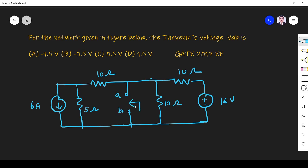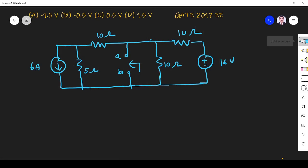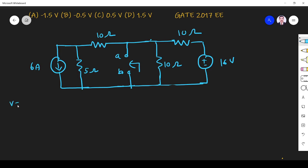So Vab we have to find. Since it is a current source and voltage, I'll convert it into a voltage source, then find the problem. How to convert a current source into voltage source? Current when parallel will become voltage in series. So 6 into 5 because V equals IR.